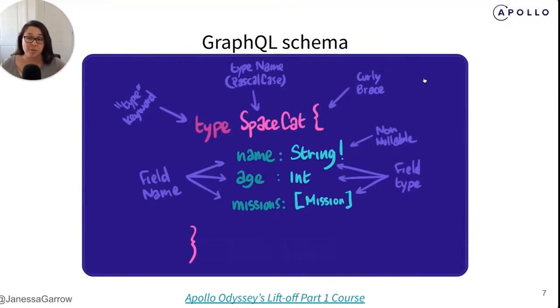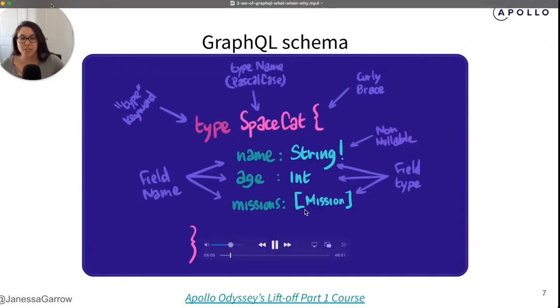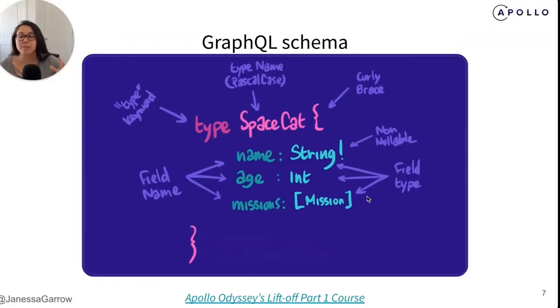So let's say we have a cat astronaut or space cat. This space cat type has some different data we can get. It has a name field, which can be a string. It has an age field, which is an integer, and a missions field, which is a list of mission object types for the different space missions this space cat has been on. We can even be nitpicky about whether or not we want certain fields to be able to return a null value by adding an exclamation point to the field type.